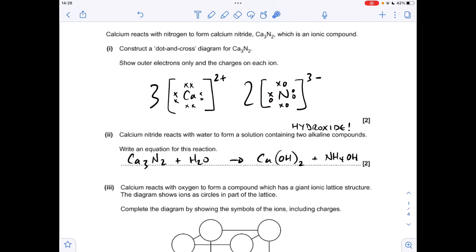Moving on to the equation. Calcium nitride reacts with water to form a solution containing two alkaline compounds. So alkaline means there's hydroxide ions present. So calcium hydroxide will be one of them, and the other one is ammonium hydroxide. You can actually say ammonia for that, so I'll show you both equations, but that's what I would go for, given it has mentioned alkaline.